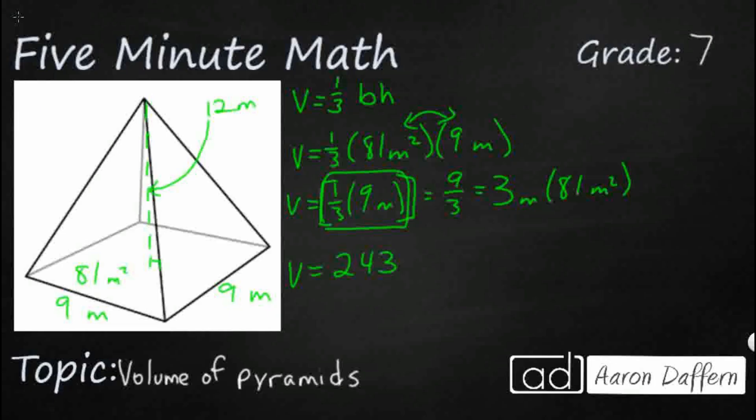That is going to be 243. Now we are dealing with cubic meters, or meters with a little 3, because we multiplied three different meters. This 9 meters, this 9 meters, and this 12 meters. So there's 3 meters. And that is how we find the volume of a square-based pyramid.